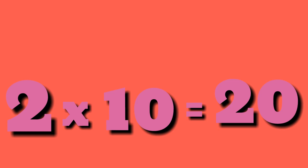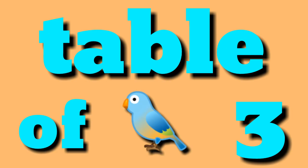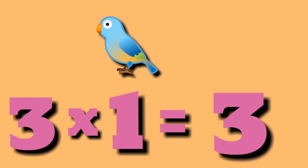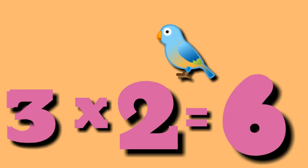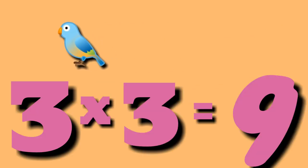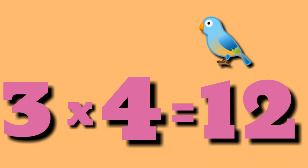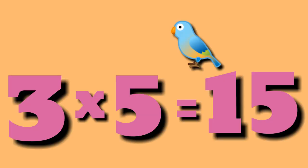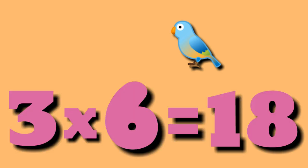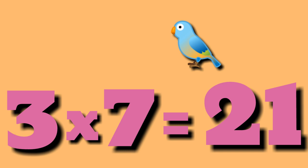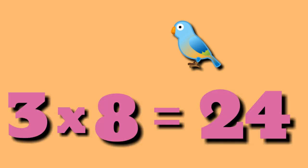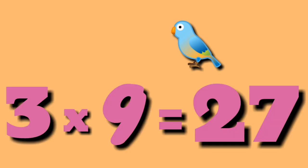Table of 3. 3 ones are 3, 3 twos are 6, 3 threes are 9, 3 fours are 12, 3 fives are 15, 3 sixes are 18, 3 sevens are 21, 3 eights are 24, 3 nines are 27, 3 tens are 30.